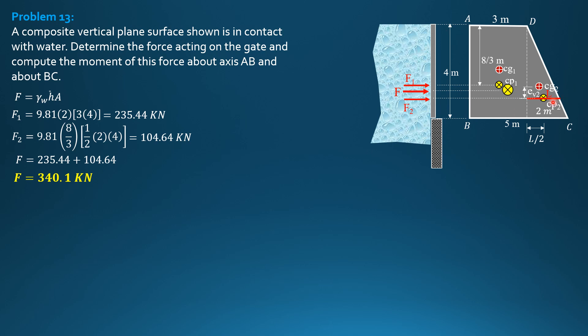So EV in general is I sub CG over area times bar H for vertical plane. So that's bar H.